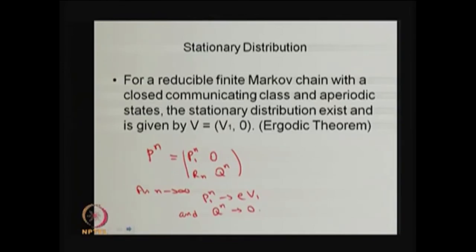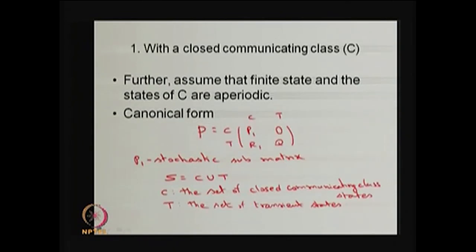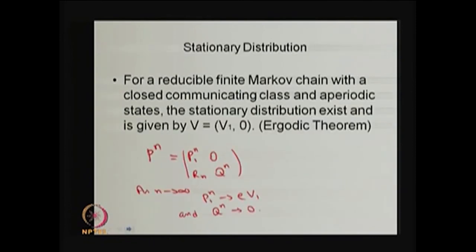How to study the stationary distribution for a reducible Markov chain, along with the assumptions: aperiodic and finite state space. Here I am giving the stationary distribution result for a reducible finite Markov chain where the Markov chain has a finite state space and is reducible.